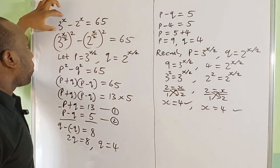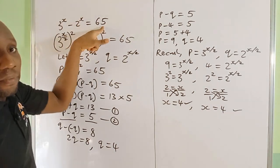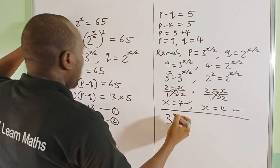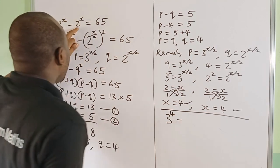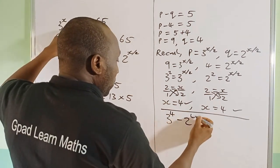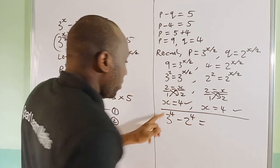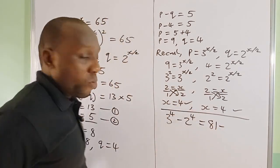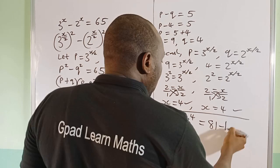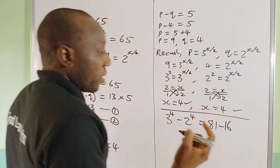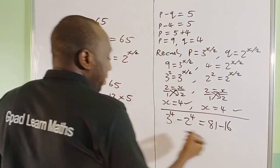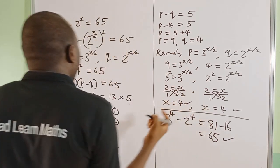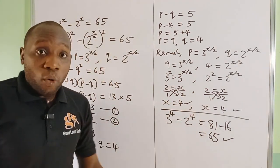Let's verify: plugging x = 4 into the original equation, 3 raised by 4 minus 2 raised by 4 = 81 − 16 = 65. That gives us exactly 65, so the value of x in this exponential equation is 4.